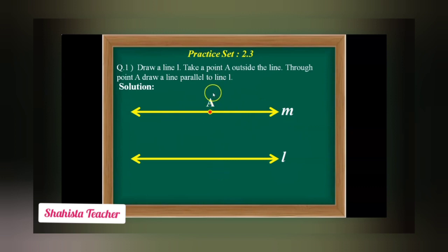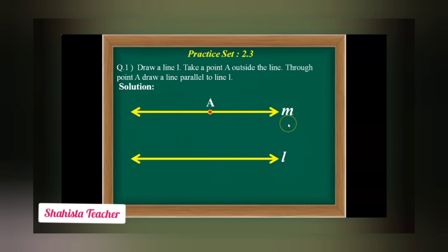Point A is outside line L. Line L is parallel to line M, and A is outside line L. In this way we finish question number one.